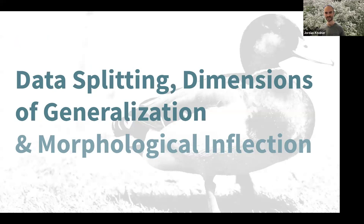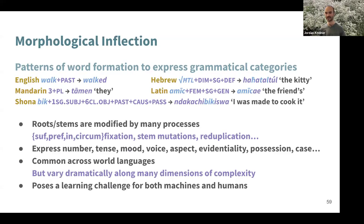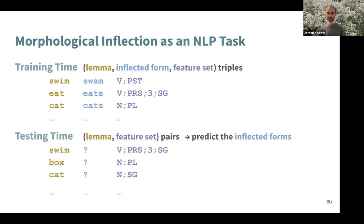Moving on to data splitting, dimensions of generalization, and morphological inflection. As a refresher, morphological inflection consists of patterns of word formation that express grammatical categories. There's quite a bit of variation across languages, posing a learning challenge for both machines and humans. Within NLP, morphological inflection has been conceived as the following task: at training time you're given triples of a lemma, an inflected form, and a feature set; at test time the task is to predict the inflected forms from the lemma and feature set. The present third-person singular of 'swim' is 'swims,' the plural of 'box' is 'boxes,' the singular of 'cat' is 'cat,' and so on.